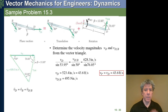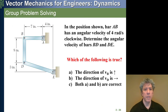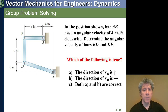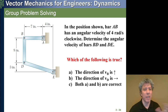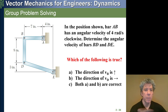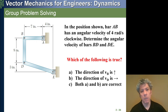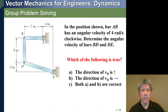The next slide is a group problem solving. In the position shown, bar AB - the upper length, 7 inches long - has an angular velocity of 4 radians per second clockwise, so it's rotating clockwise about A. Determine the angular velocity of bars BD and DE.